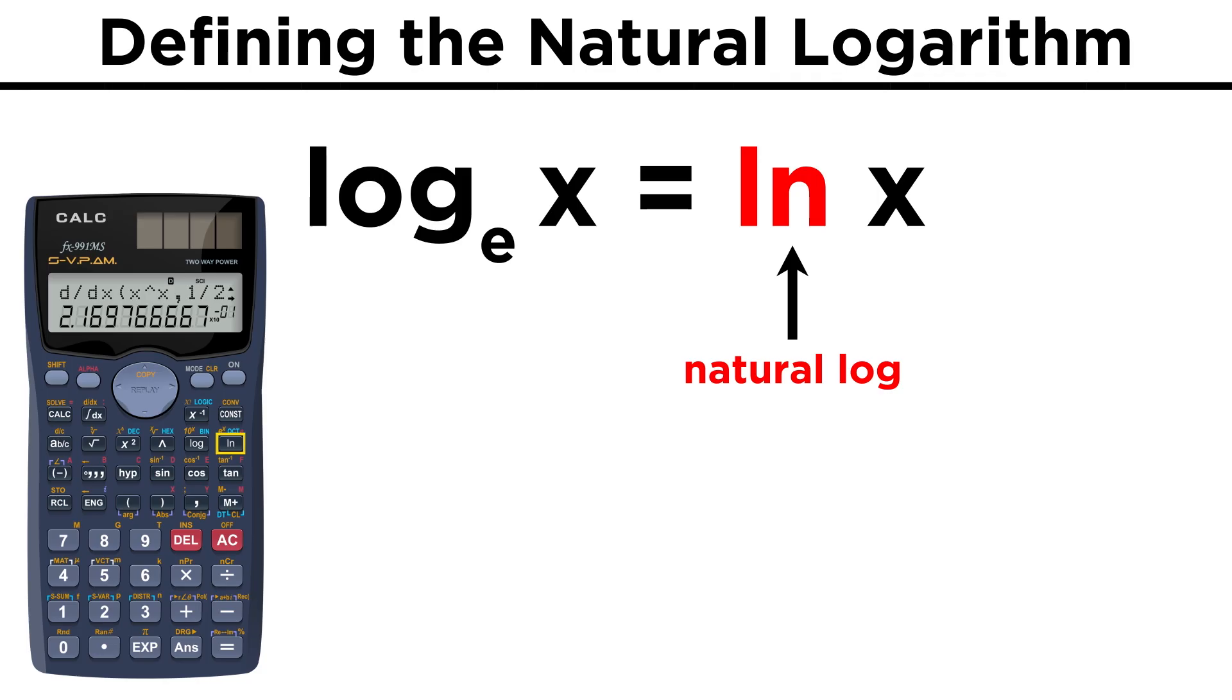If you see a button on your calculator that says ln, this is the button that takes the natural log of a number, which is the exponent that E must be raised to in order to get that number.